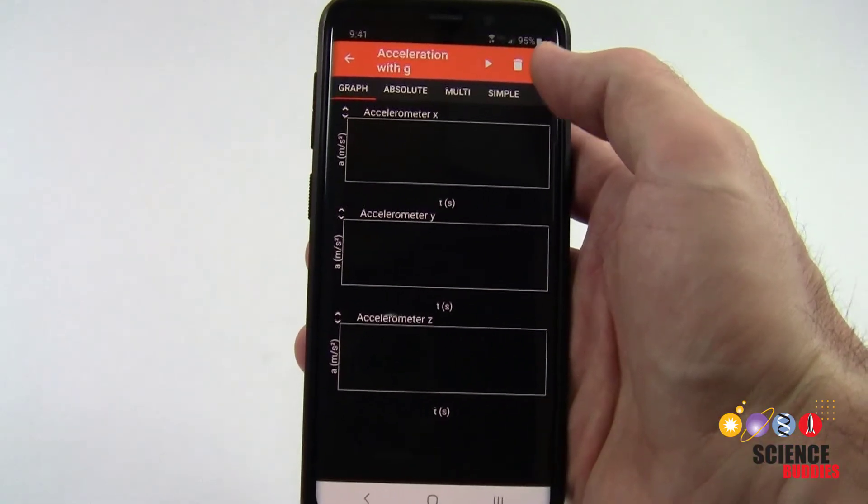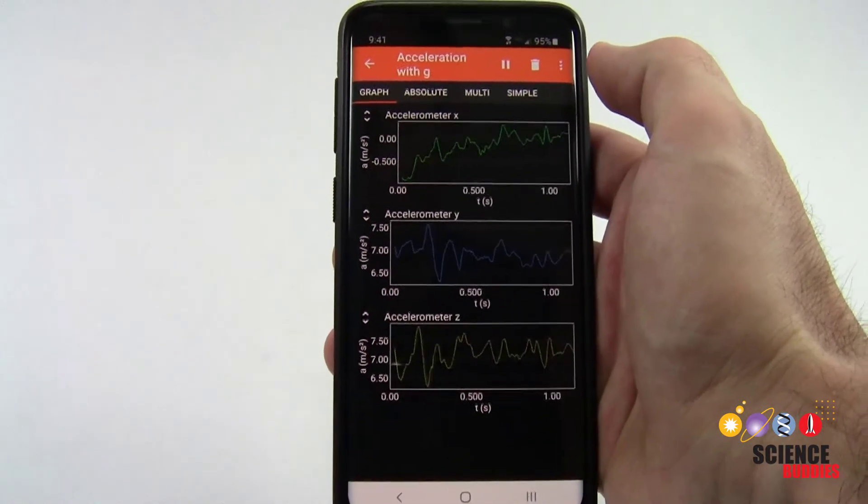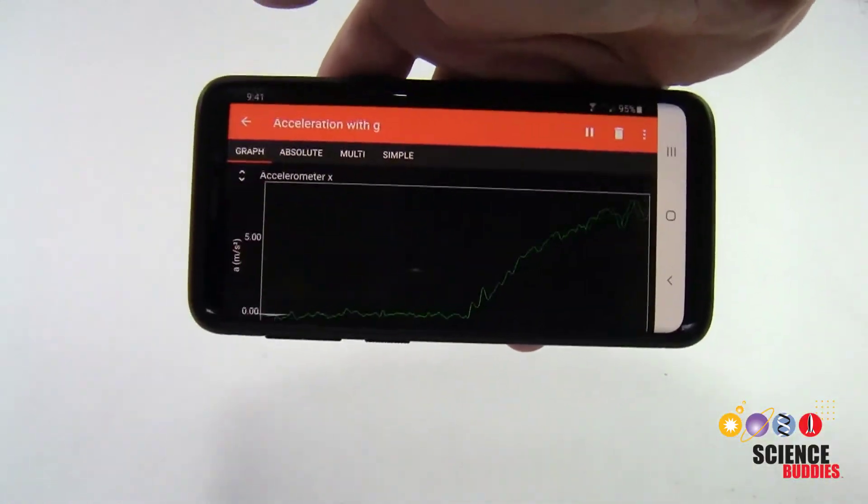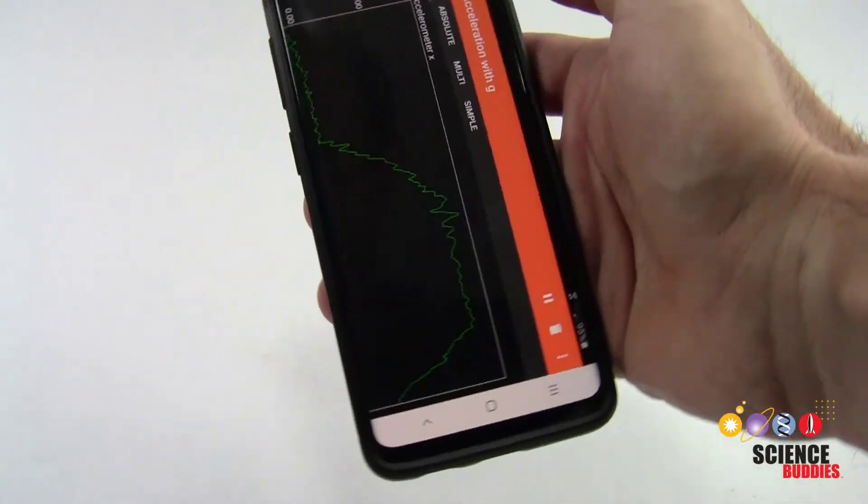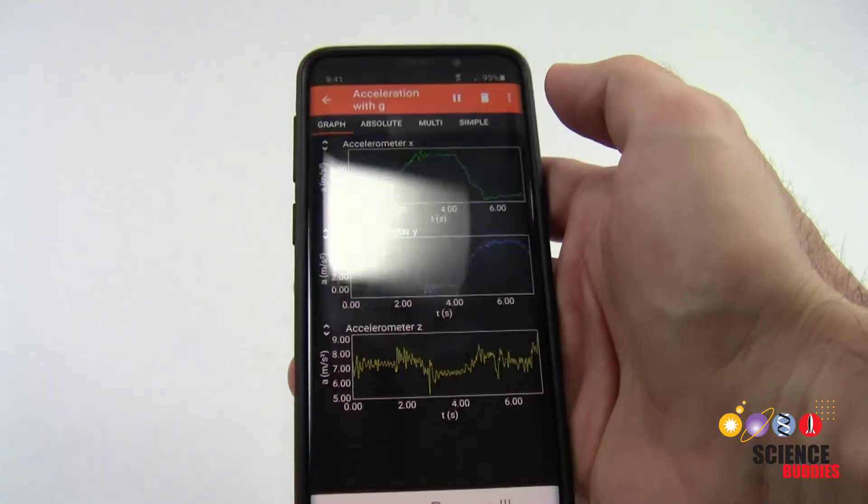Many smartphones also include an accelerometer. For example, this helps your phone detect whether you are holding it in portrait or landscape orientation and also allows motion control during games.